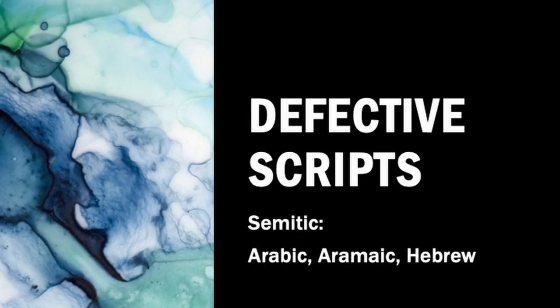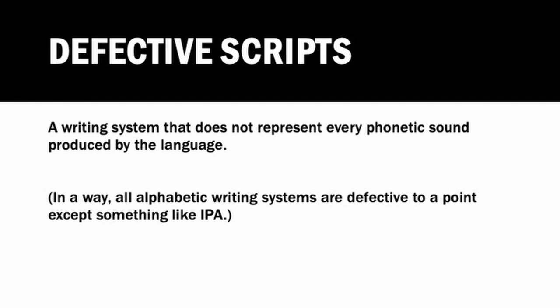Today, we'll be looking at and answering the question: what are defective scripts? As the name implies, a defective script is some type of writing system that has a defect to it, some kind of imperfection. And if we're honest, every sort of writing system is defective to a point, unless it's something like IPA, the International Phonetic Alphabet, that tries to account for every single sound. Maybe in the ancient world, Avestan or something like that would try and capture every sound.